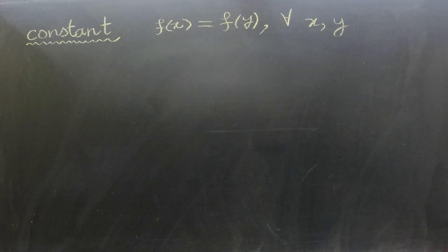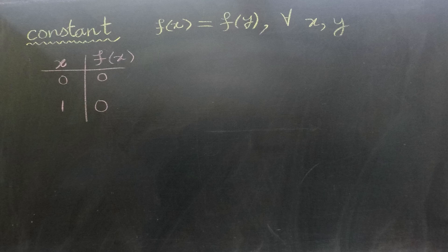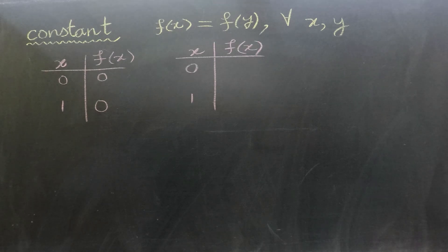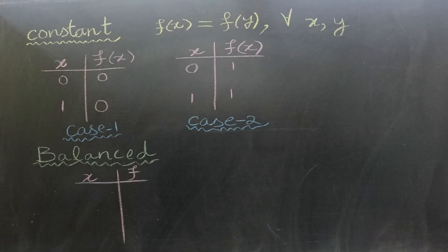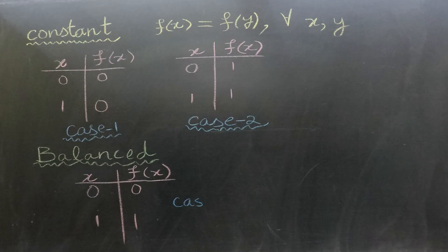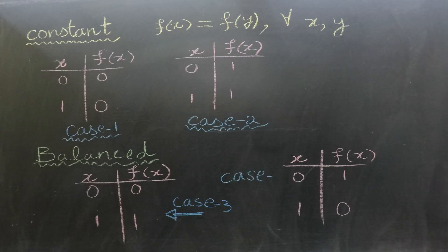Let's consider all the cases for both constant and balanced scenarios. When the function is constant, for inputs zero and one it will either always produce all zeros as output — referred to as case one — or all ones as output, case two. When the function is balanced we have two additional cases. In one scenario for inputs zero and one it will yield the same output as the input, case three. Alternatively, for inputs zero and one it will yield one and zero, which we will call case four.